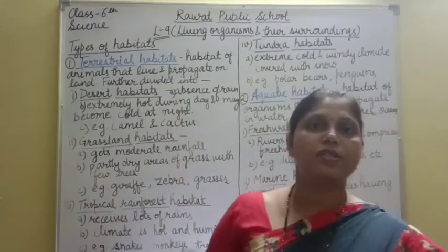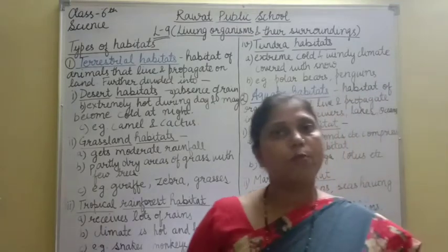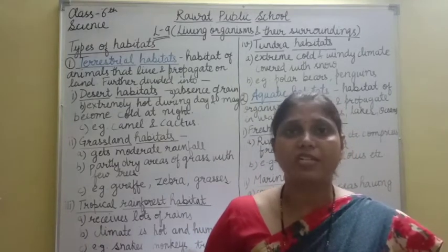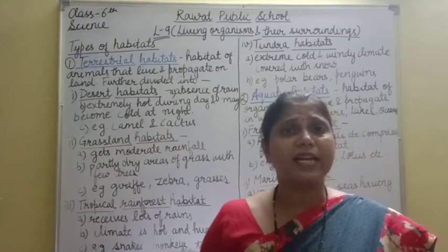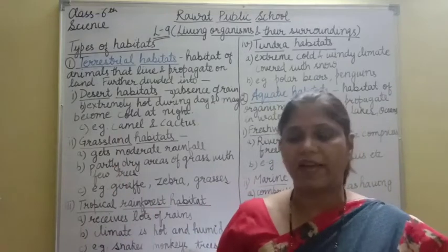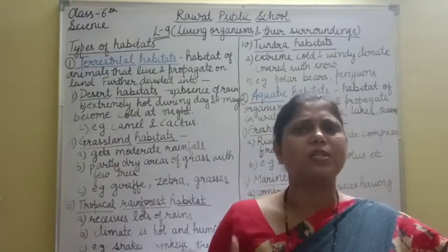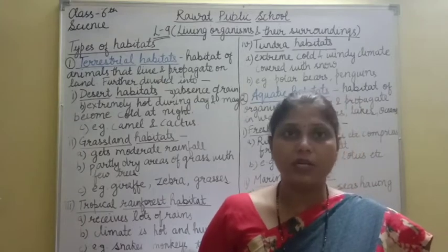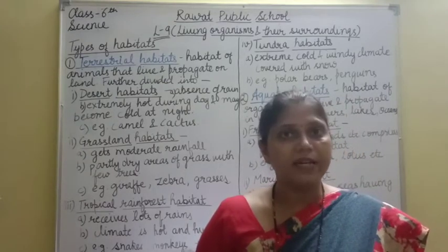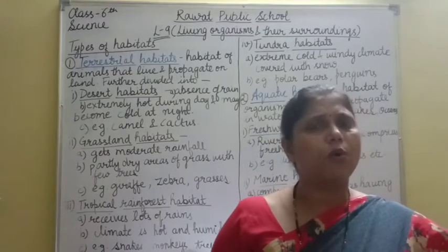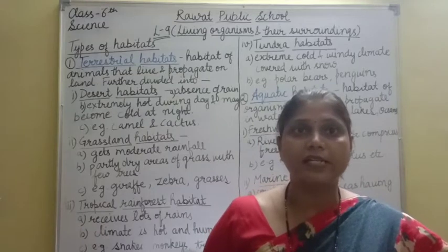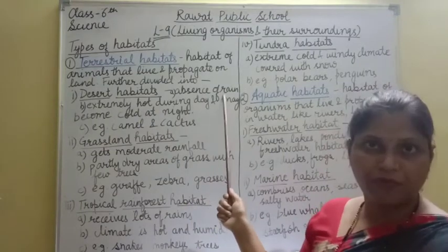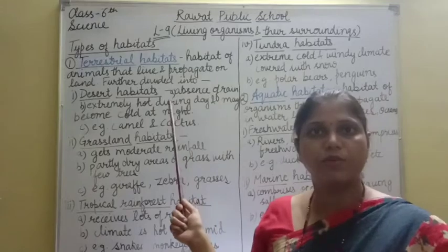First type of terrestrial habitat is desert habitat. Desert comprises of sand — जहां पे sand होता है. वहां का temperature extremely hot during the day होता है क्योंकि sun की heat desert की sand को बहुत ज़्यादा गर्म कर देती है. And the nights are colder — रात के time में sand बहुत ज़्यादा cool हो जाती है. Desert habitat में rainfall बिल्कुल ना के बराबर होती है — absence of rain या बहुत कम rain.